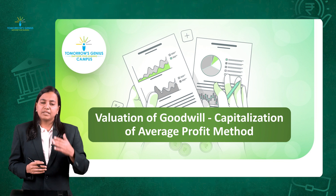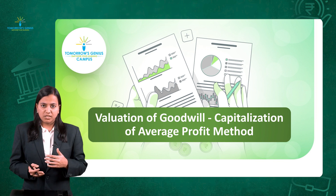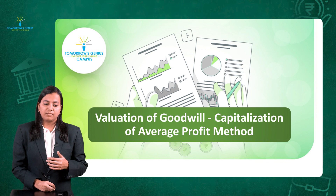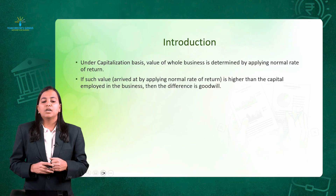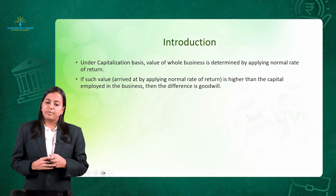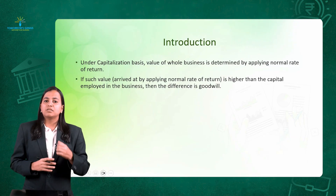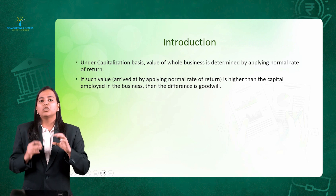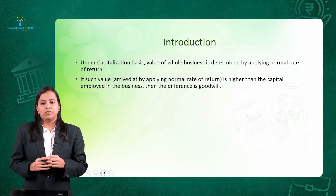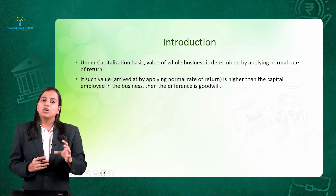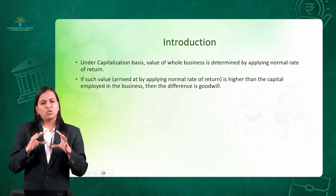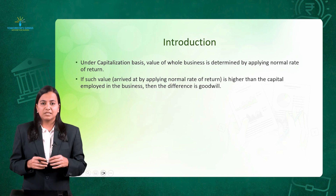I am going to provide you step-by-step calculations on how to calculate Goodwill. Under the Capitalization Method, the value of the whole business is determined by applying the Normal Rate of Return. The Normal Rate of Return is the amount which you would normally earn in your business cycle.